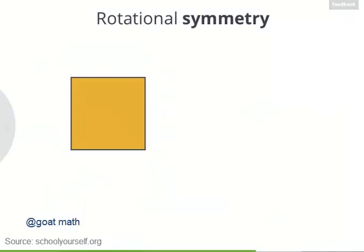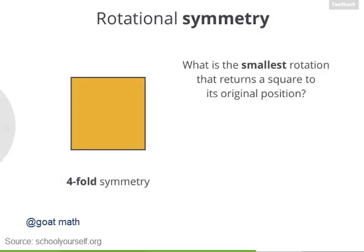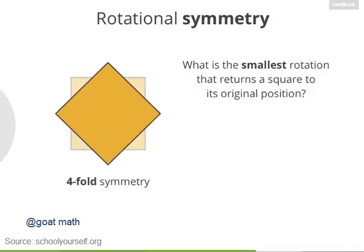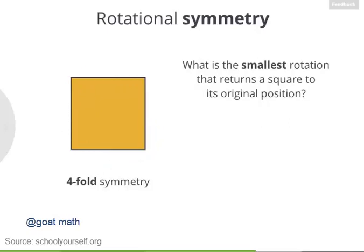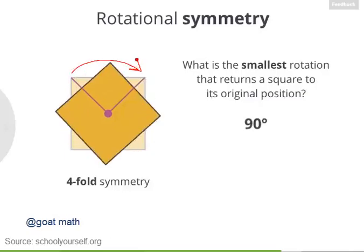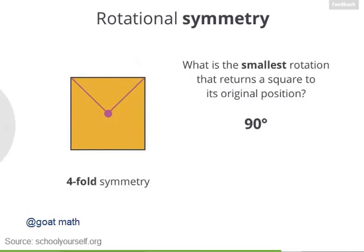Now what about a square? Squares have four-fold symmetry. So what's the smallest rotation that returns a square to its original position? You want to rotate the square so that this corner moves over here, and that's a 90-degree rotation. And if 90 degrees will get this square back to its original position, then so will rotations of 180 degrees and 270 degrees, which are multiples of 90 degrees.